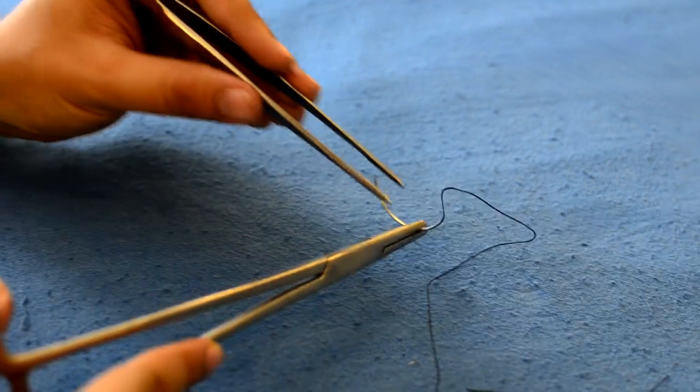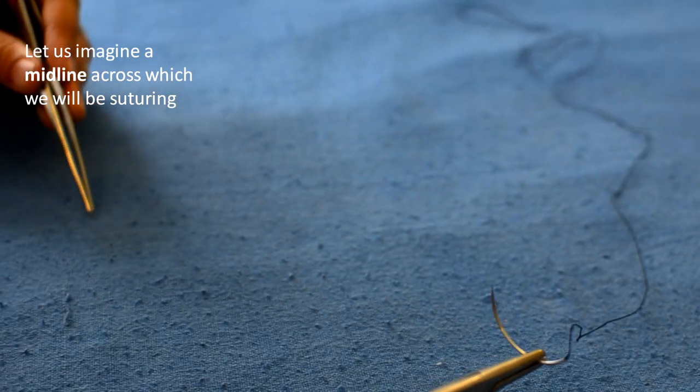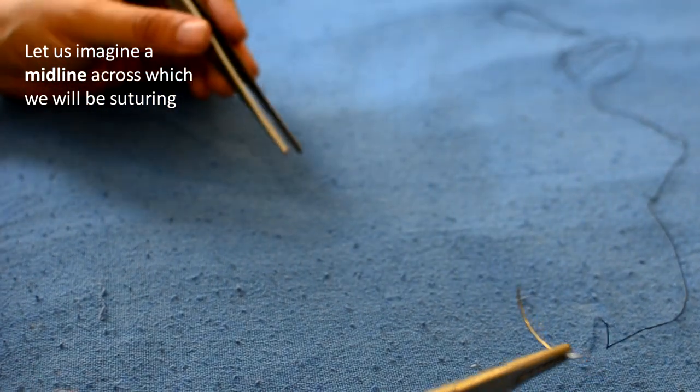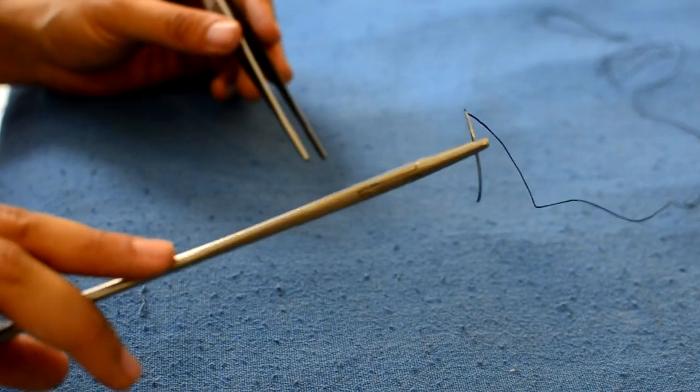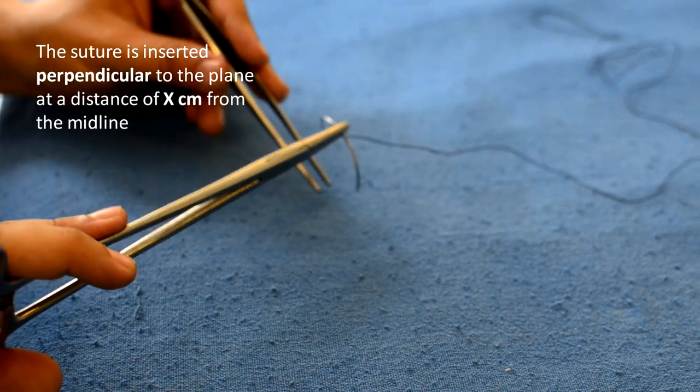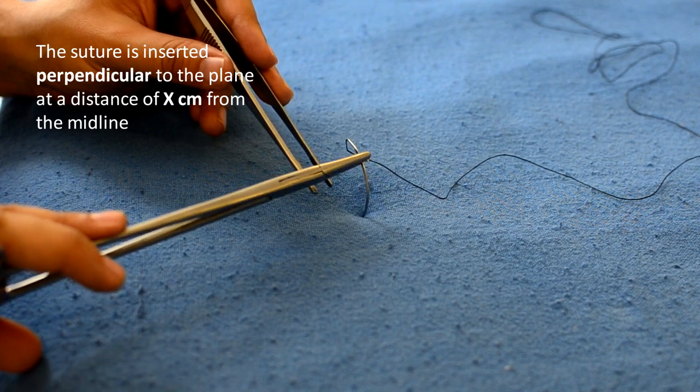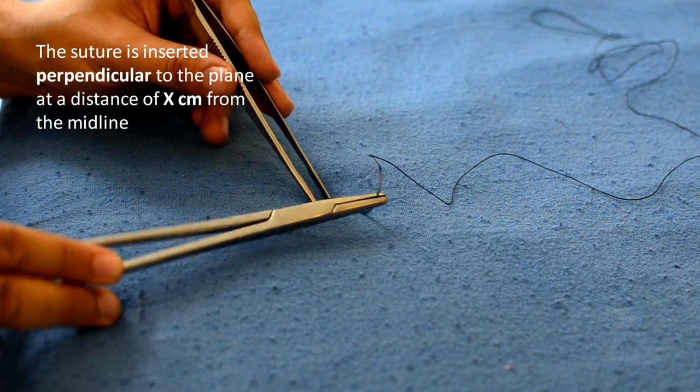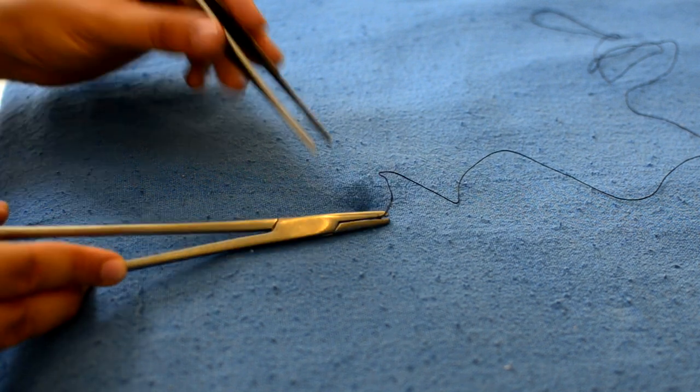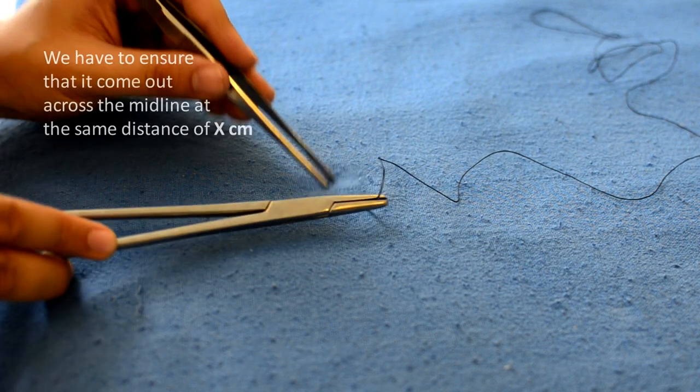Let us now imagine a midline across which we will be suturing. The needle is introduced perpendicular to the plane and we assume a distance of x from the midline. When the tip of the needle comes out onto the opposite side, it should be at the same distance of x from the midline.